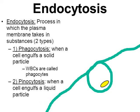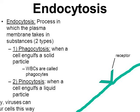The second type of endocytosis is called pinocytosis. Very similar in concept, the difference between phagocytosis and pinocytosis is that in pinocytosis, the cell will engulf and take in liquid particles, but the concept is the same.